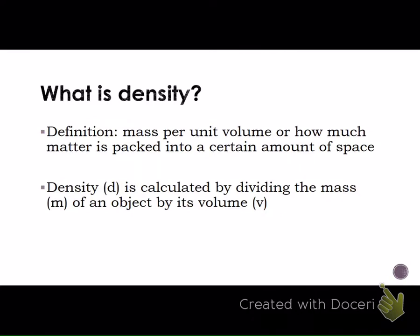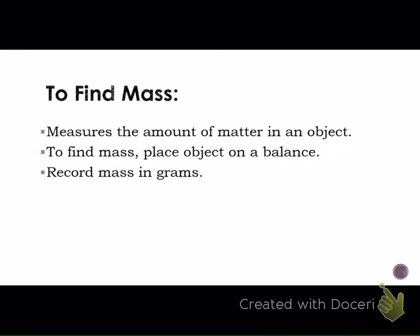Density is calculated by dividing the mass of an object by its volume. Mass measures the amount of matter in an object. To find mass, we put the object on a balance and record the mass in grams.